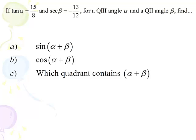Here's our first problem. The tangent of theta is 15 eighths, and secant beta is negative 13 twelfths. For a quadrant 3 angle alpha and a quadrant 2 angle beta, we're going to find sine of alpha plus beta, cosine of alpha plus beta, and the quadrant containing alpha plus beta. This is very similar to what we did in the previous lesson — the only difference is they're not acute angles.